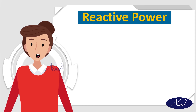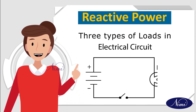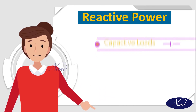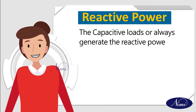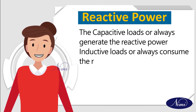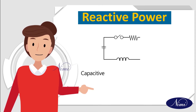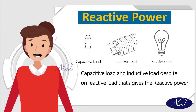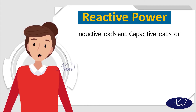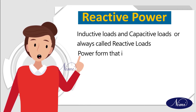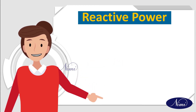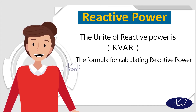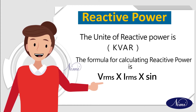Next is reactive power. There are three types of loads in electrical circuits: resistive load, inductive load, and capacitive load. Capacitive loads always generate reactive power and inductive loads always consume reactive power. The resultant of these two powers dissipates on the reactive load, giving the reactive power. The unit of reactive power is KVAR, and the formula is V_RMS times I_RMS times sin theta.